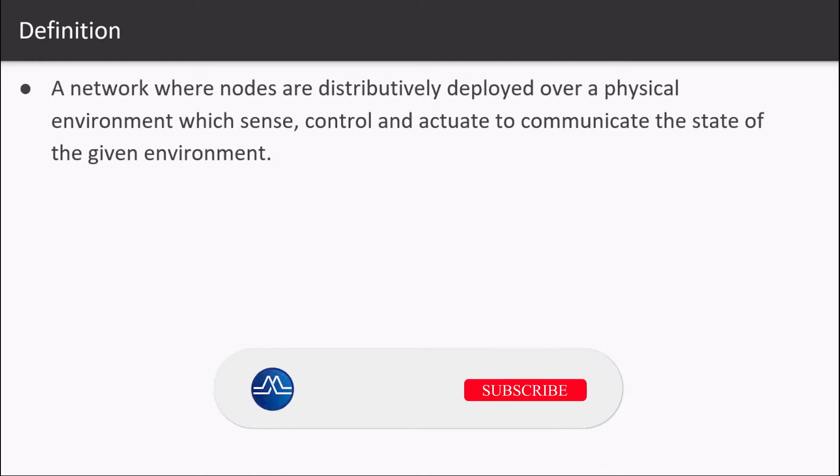The formal definition of wireless sensor network can be described as a network where nodes are distributively deployed over a physical environment which sense, control and actuate to communicate the state of the given environment.